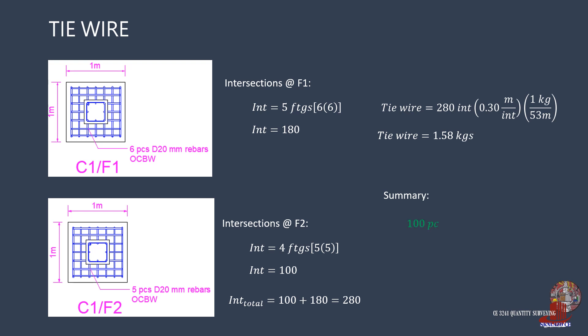In summary, the footings require 100 pieces of D20mm reinforced steel bars of 1,330 millimeters length, and 2 kilograms of GI tie wire.